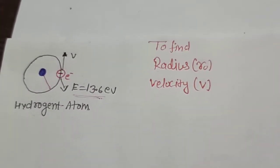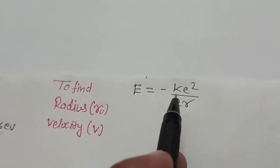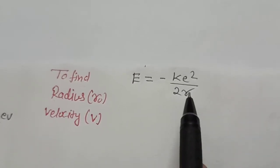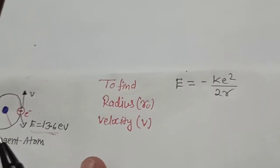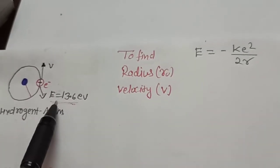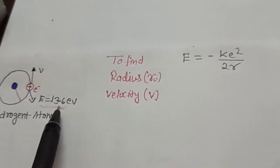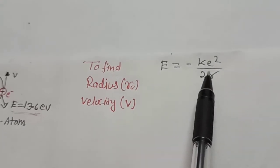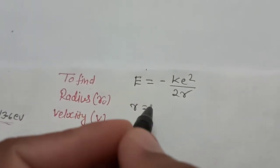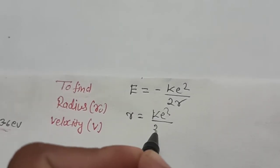We will use the energy formula: E = -ke² / (4πε₀r), where r is the radius of the first orbit. Rearranging this formula, r comes to the numerator and E goes to the denominator, giving us r = ke² / (2E). We will use this formula to find the radius.